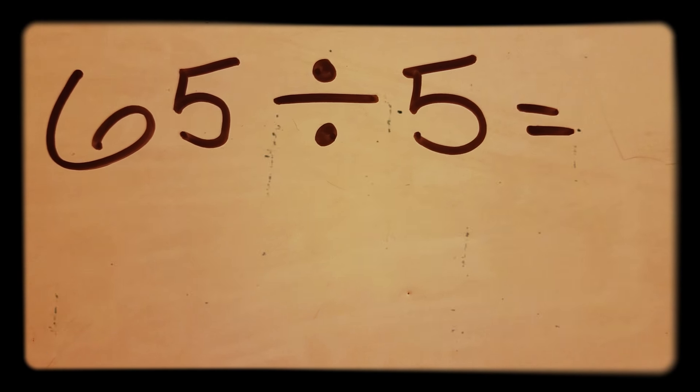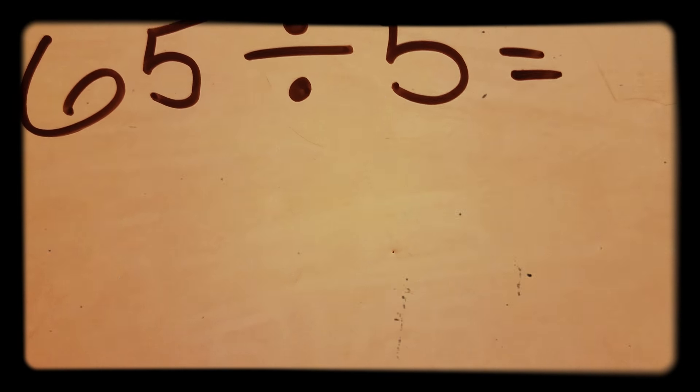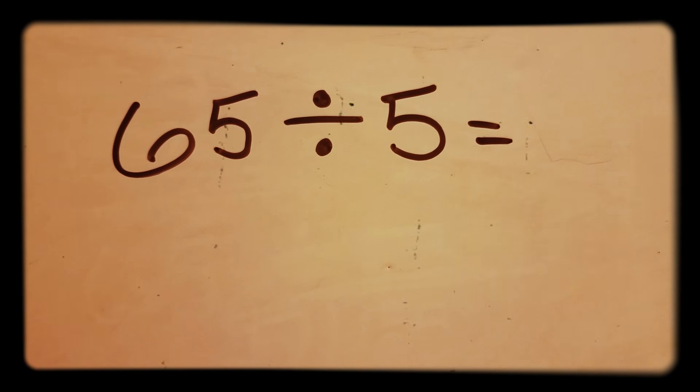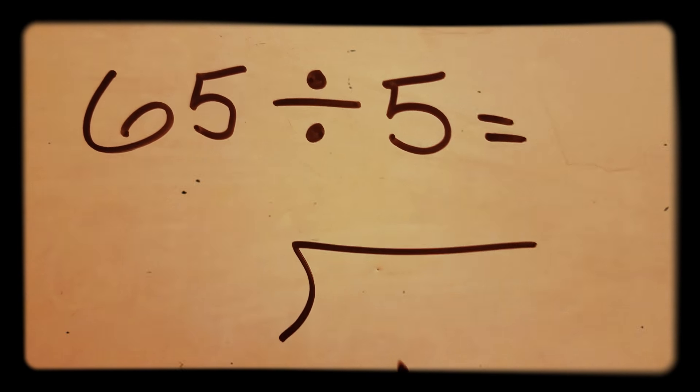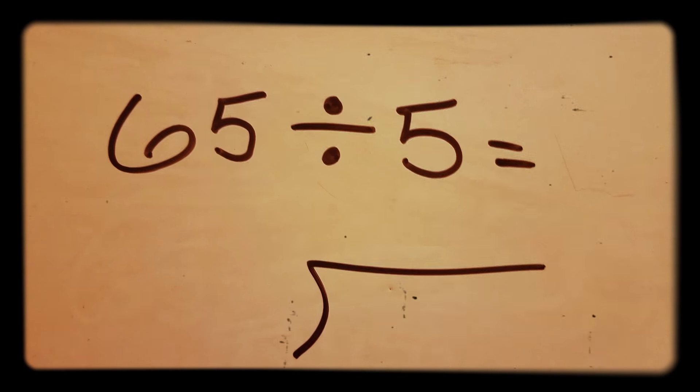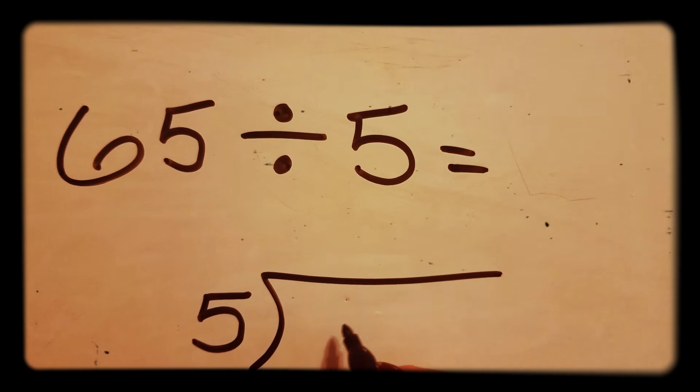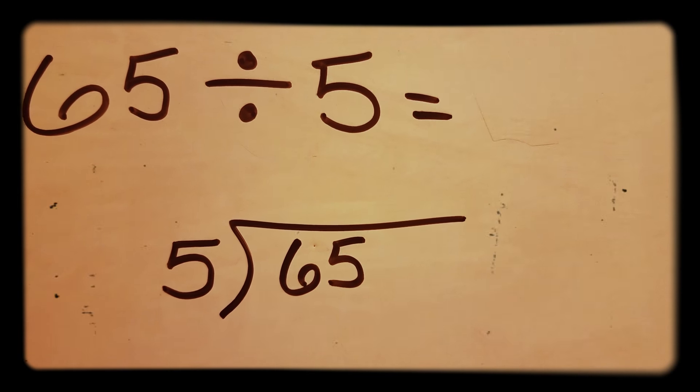Okay, so we have 65 divided by 5. The first thing we want to do is set it up. The second number always goes on the outside of the box and the first number always goes on the inside of the box.